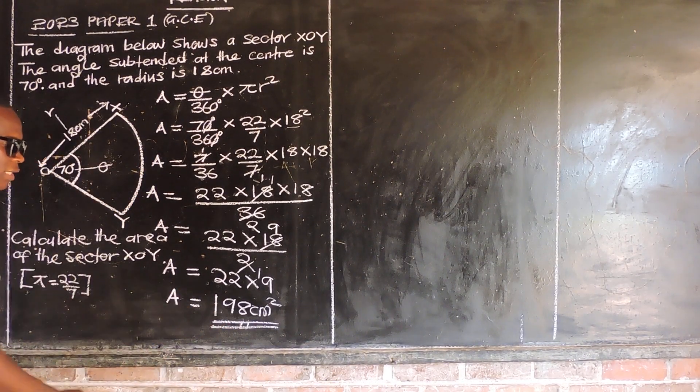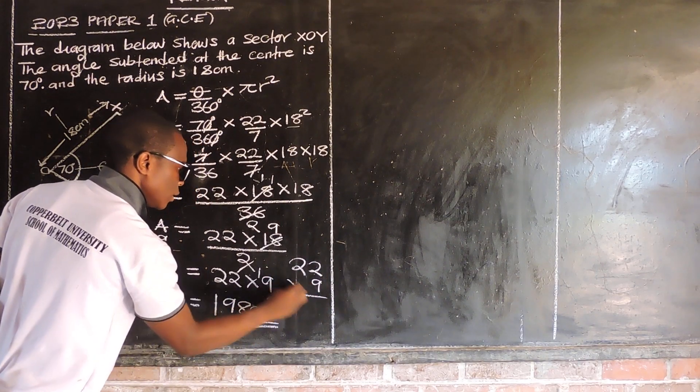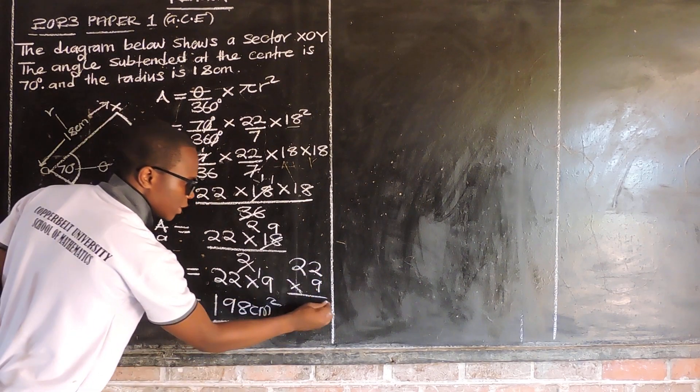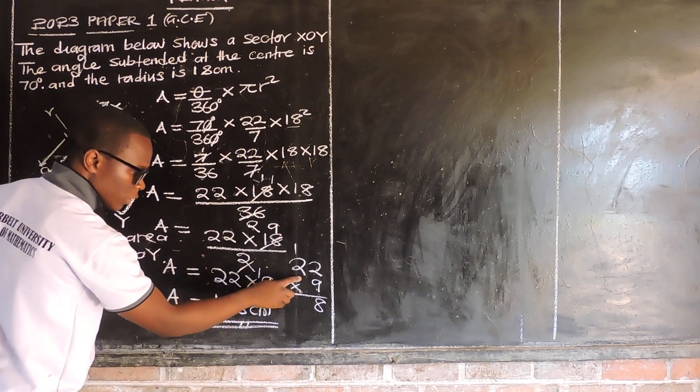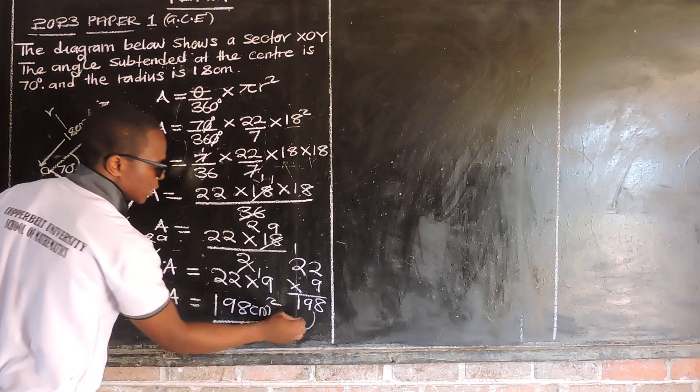Let me show you where this 198 has come from. So 22 multiplied by 9. 9 times 2 get 18, write 8 carry 1. Then 9 times 2 get 18 plus 1 get 19. So this is where I got this answer from.